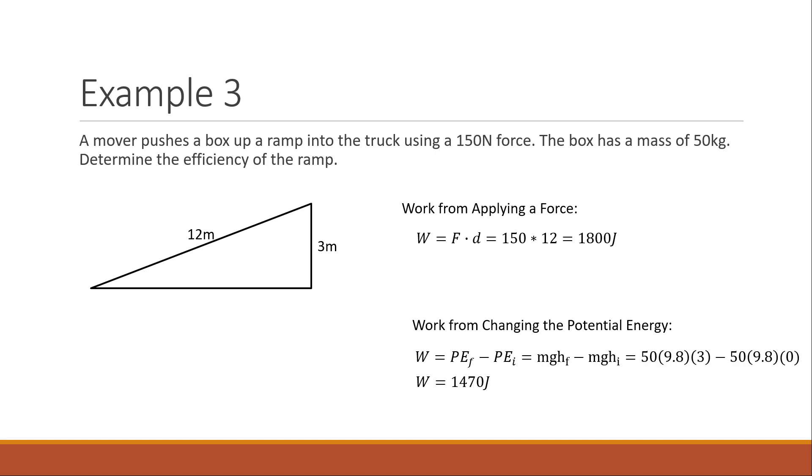I can go ahead and punch these numbers in. Applying the force is 150 Newtons times those 12 meters, because that'd be parallel to the force there. That's the distance parallel. So that's 1800 joules. And the work from changing the potential energy would be the change of potential energy, mgh final minus mgh initial. So 50 times 9.8 times 3 minus 50 times 9.8 times 0, 1470 joules. Now it's a matter of feeling like, all right, time to put this into my efficiency formula. I have my output work over my input work. Which one's which?